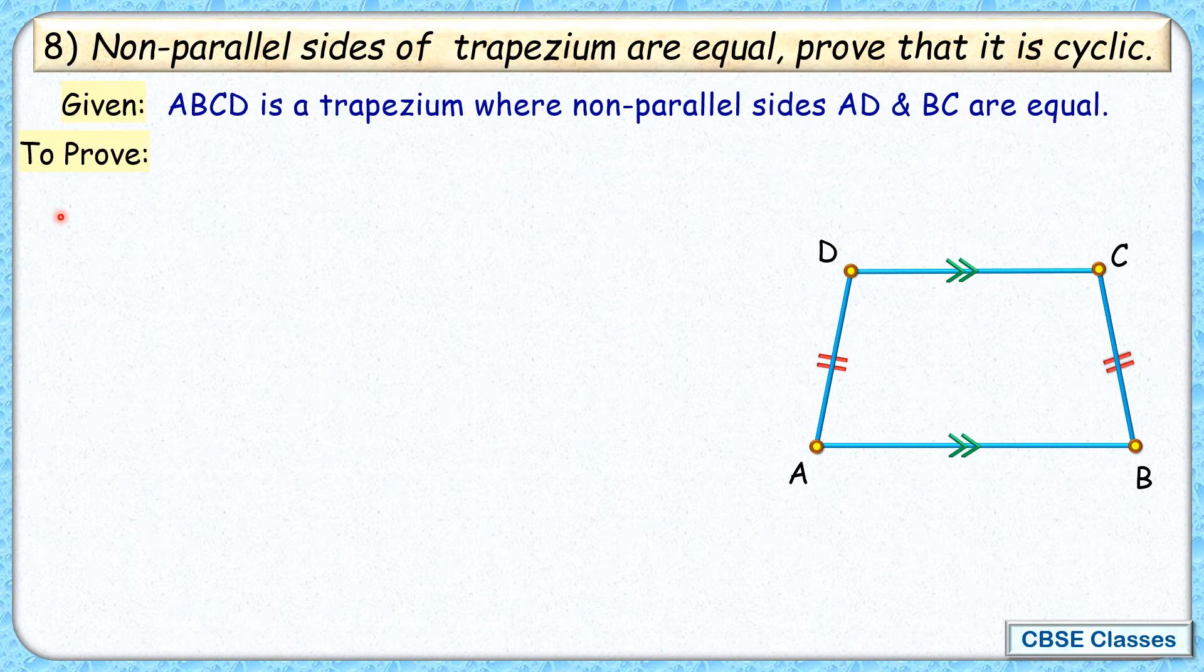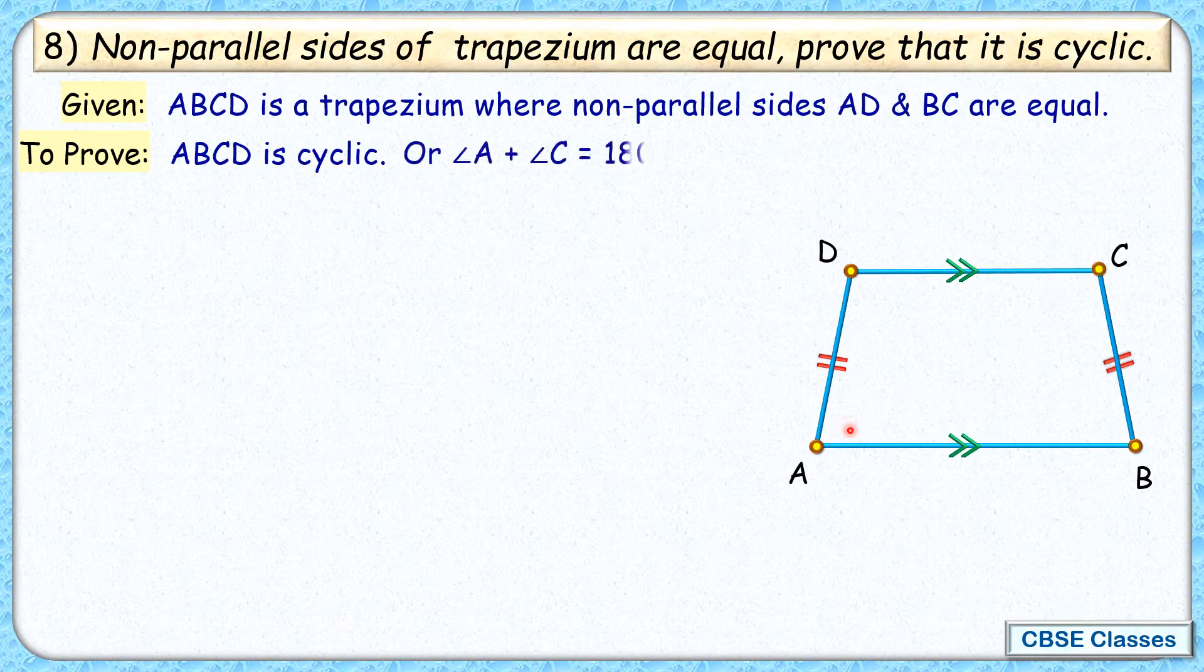And what do we have to prove? We have to prove that ABCD is cyclic. In turn, we have to prove that opposite angles are supplementary. Because if opposite angles sum to 180 degrees, then by theorem it will become cyclic.